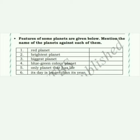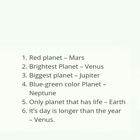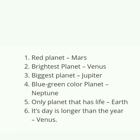Let's review the answers once: Red planet — Mars. Brightest planet — Venus. Biggest planet in the solar system — Jupiter. Blue-green color planet — Neptune. Only planet that has life — Earth. Its day is longer than its year — Venus.